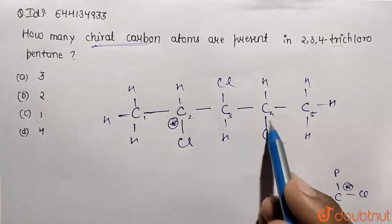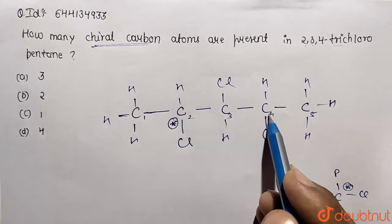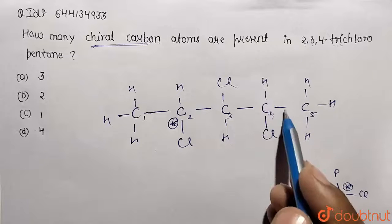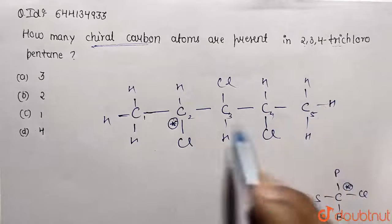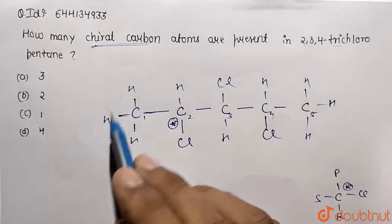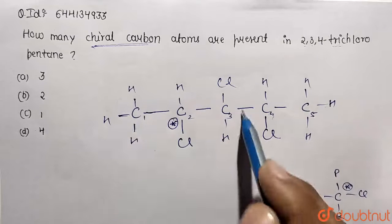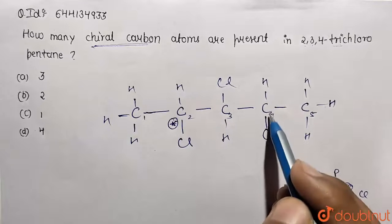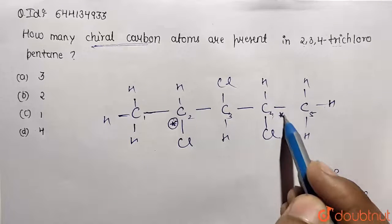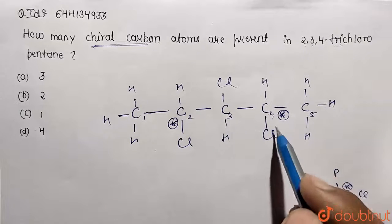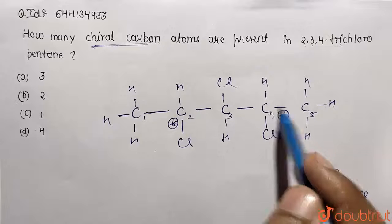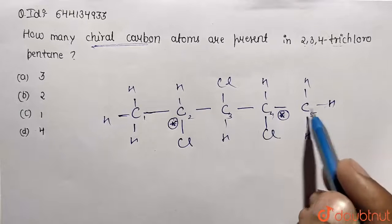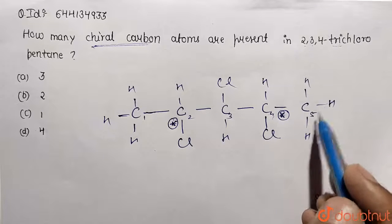Now checking carbon 4: it has hydrogen on one side, a methyl group on another side, a large alkyl group on another side, and chlorine on the fourth side. Since all four valencies are different, carbon 4 is also a chiral center.